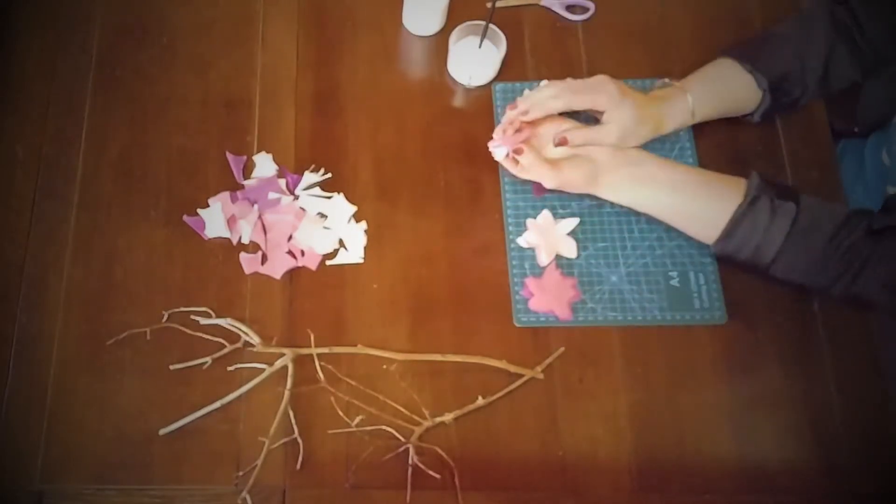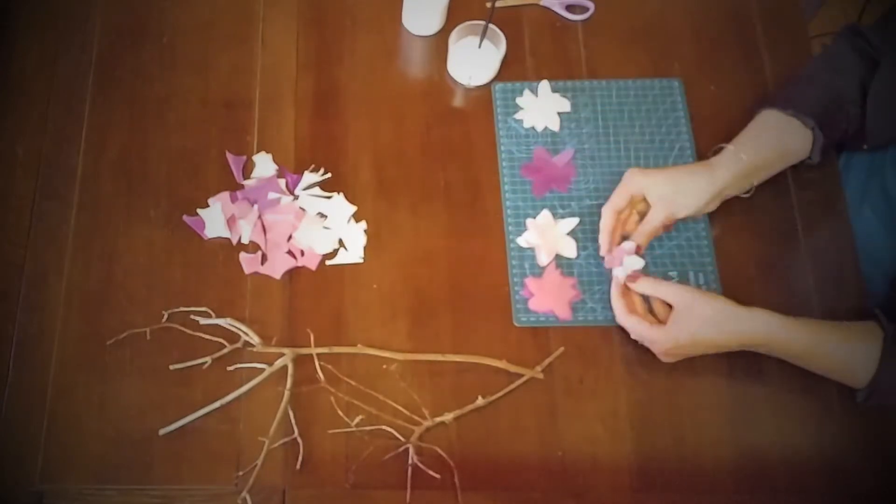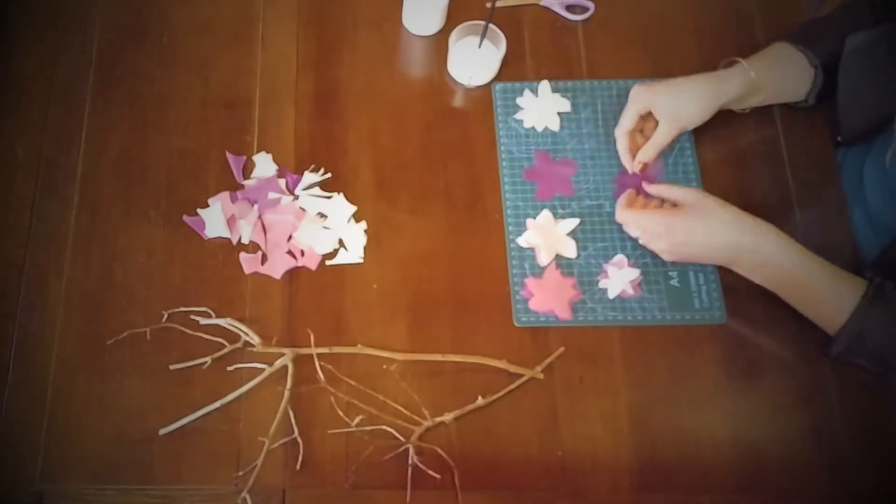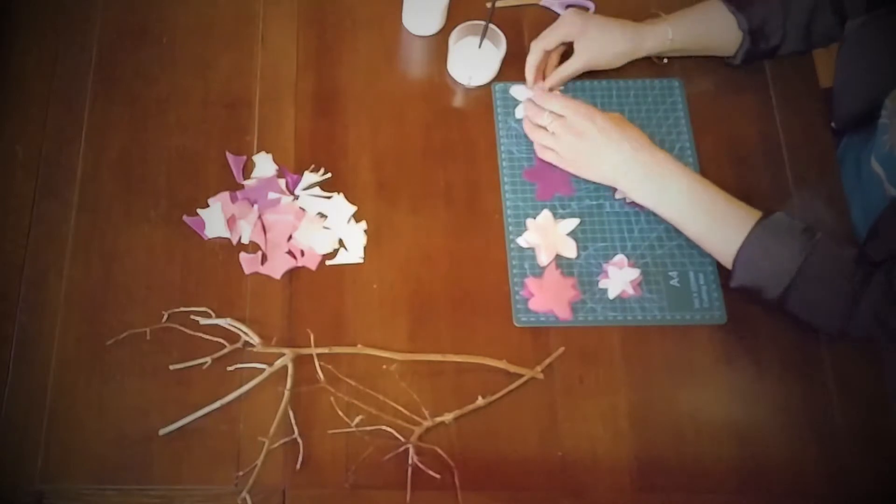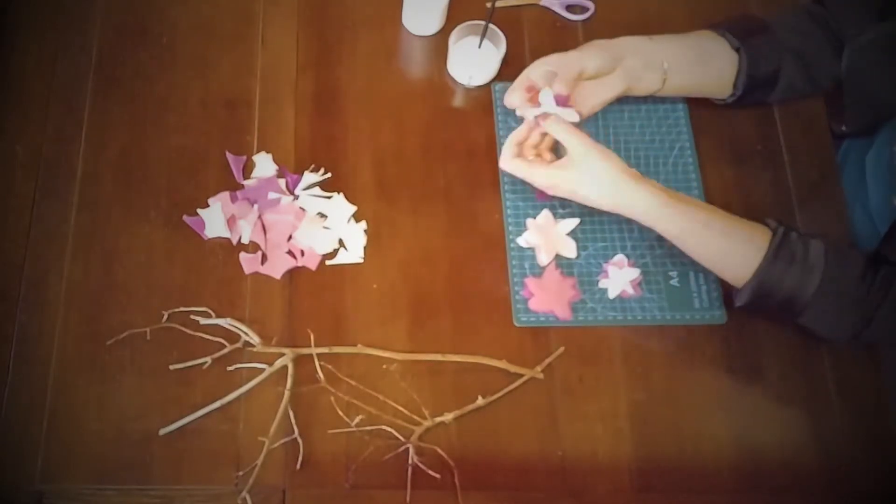Pinch and twist the paper at the bottom. Pull out the petals depending on how full you want the flower. Carry on with this process using all the colours until you have made as many flowers as you would like.